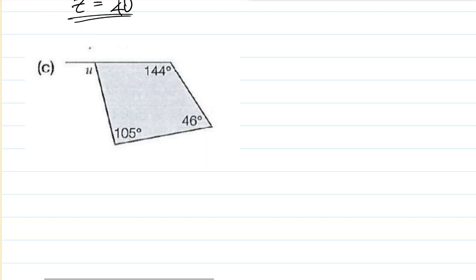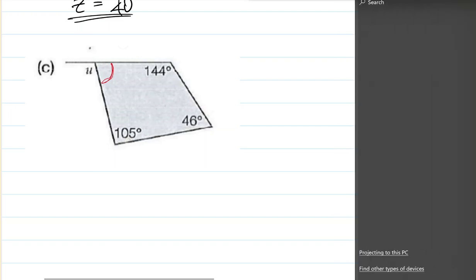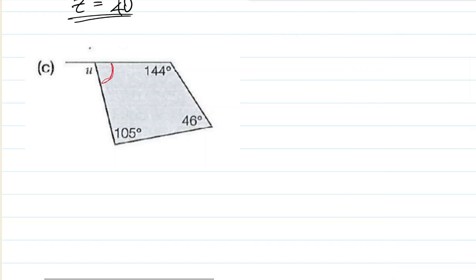So what I'm going to do first is a trick question here. It wants you to find U, but first you have to find this angle first. Once you have that angle, so we'll start again. To get U, first I have to get this variable here. I'm going to call it X.